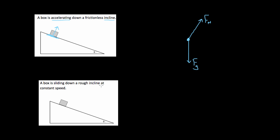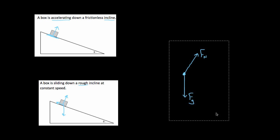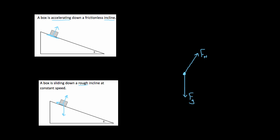What if the box slides down a rough incline at constant speed? Same setup: gravity straight down, normal force perpendicular to the surface. But now there's also a friction force parallel to the incline pointing back up the ramp, opposing the sliding. That's the force diagram for a rough incline at constant speed.